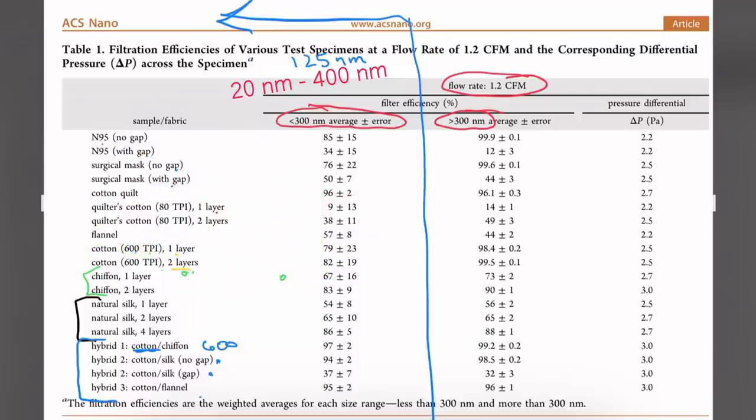Let's take a look at the N95 results. The N95 without a gap filtered out 85% of the particles smaller than 300 nanometers, which would include the average size coronavirus. You can see it's plus or minus 15, which means the range could be between 70 and 100 percent. An N95 with a gap, however - if your mask isn't fitting properly, you're not wearing it properly - you're going to reduce from 85 percent down to 34 percent, still plus or minus 15.